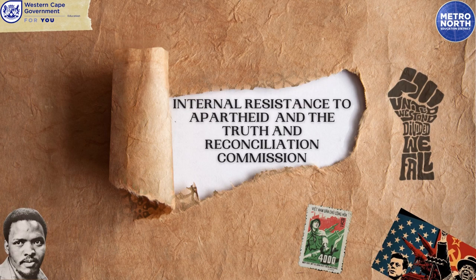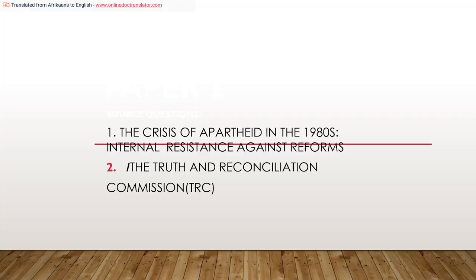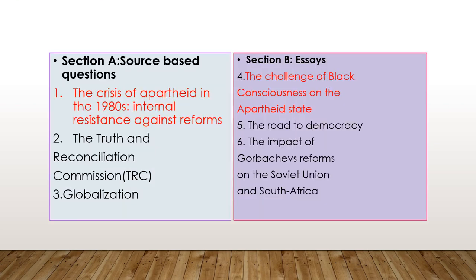Good day, grade 12s. Today we'll be focusing on Paper 2: the crisis of apartheid in the 1980s, internal resistance against reforms, as well as the Truth and Reconciliation Commission. Both of these sections are source-based sections that we will be covering today. In front of you is the layout for Paper 2. On the left-hand side we have Section A: source-based questions — question one, the crisis of apartheid in the 1980s; question two, the TRC; question three, globalization. On the right-hand side, Section B: essay questions. Today we will be focusing on question one and question two.